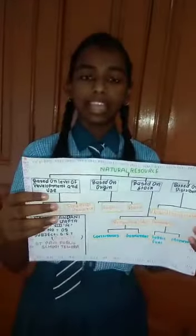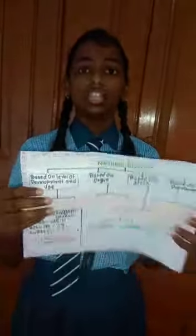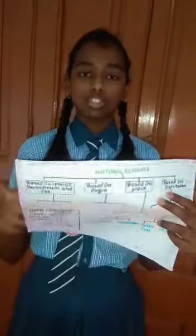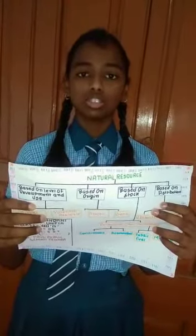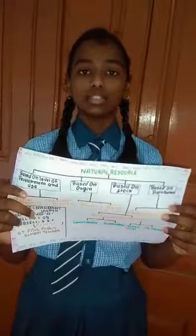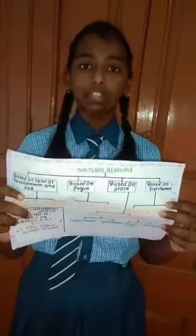In this activity, I represent types of natural resources. First, on the basis of development and use, there are two resources: actual resources and potential resources. Actual resources are those resources whose quantity is known and which are currently being used. Example: coal.